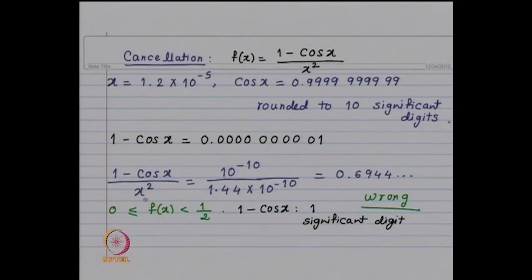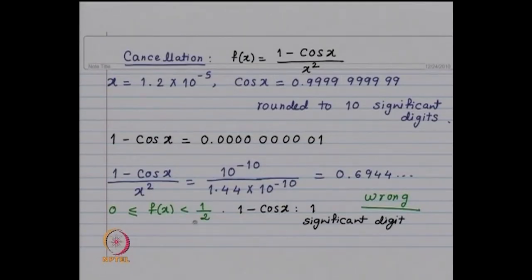Then when you look at (1 - cos x) / x², with 1 - cos x ≈ 10⁻¹⁰ and x² = 1.44 × 10⁻¹⁰, you get 0.6944. But this number is completely wrong, because one can show that 0 ≤ f(x) ≤ 1/2. This is catastrophic cancellation. When you subtract two numbers whose many digits coincide, there is a loss of accuracy or loss of significant digits.